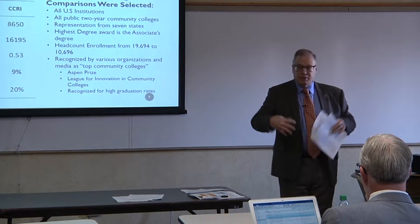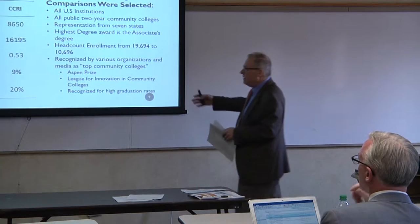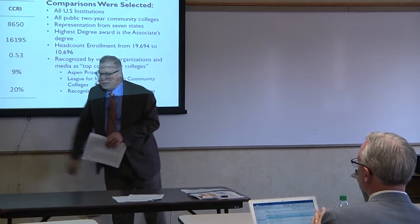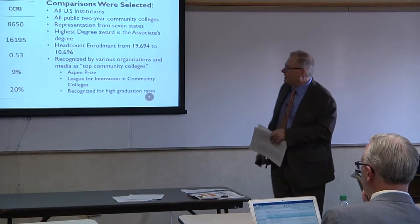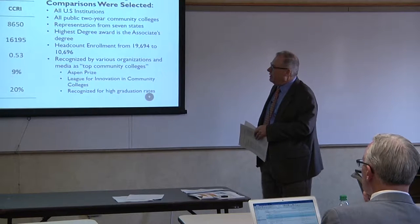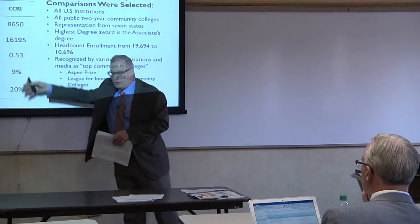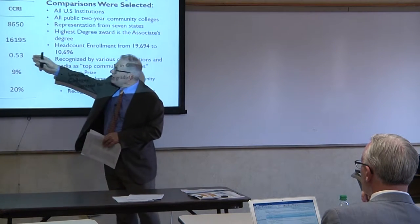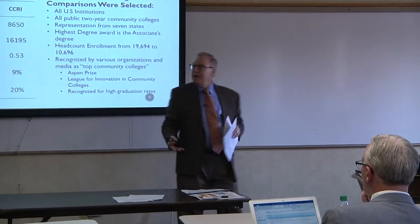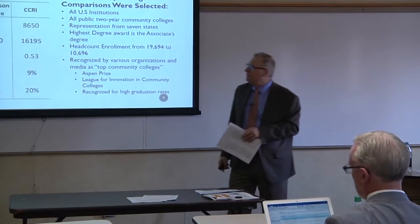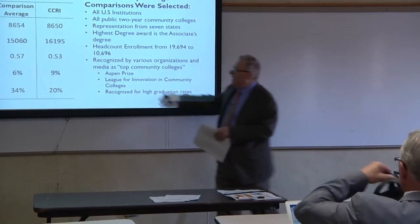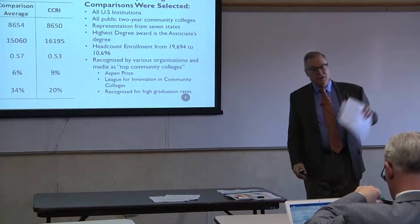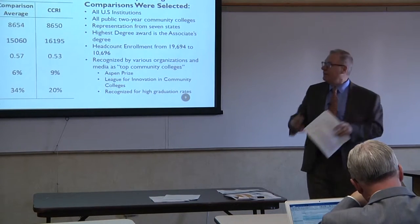We're trying to build a world-class organization moving forward, so it makes sense to compare you with others. This is based on the Integrated Postsecondary Education Data System. Your full-time equivalent fall enrollment — the comparison average of those 25 institutions was about 8,654 in terms of fall FTE; you were at 8,650. So collectively they're very similar in size to you. You have a slightly higher head count but a slightly lower FTE-to-head-count ratio.